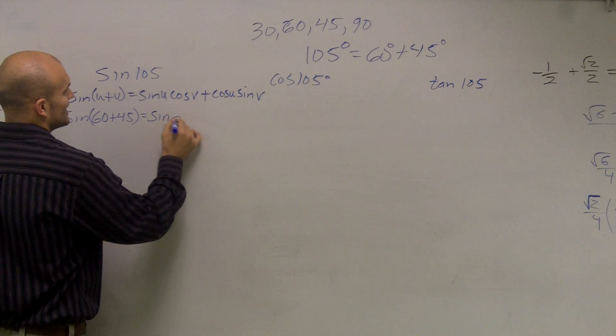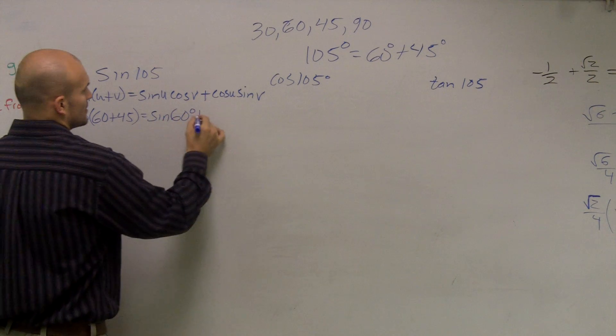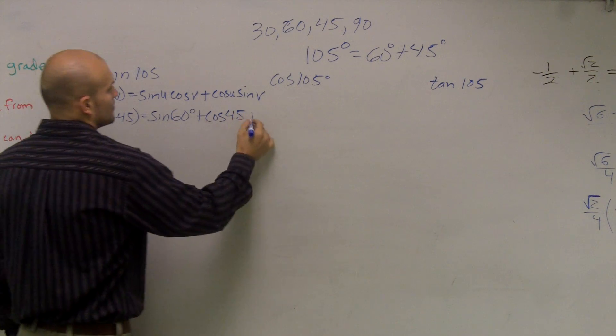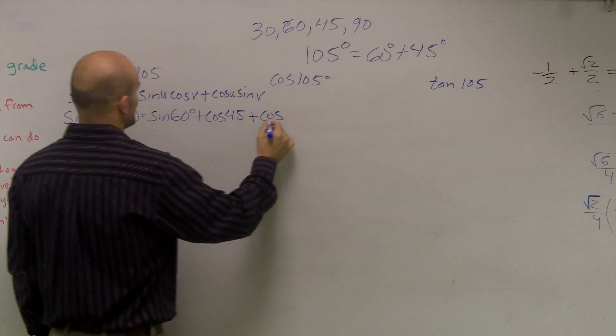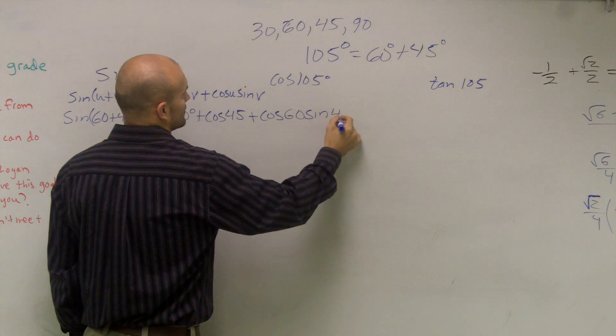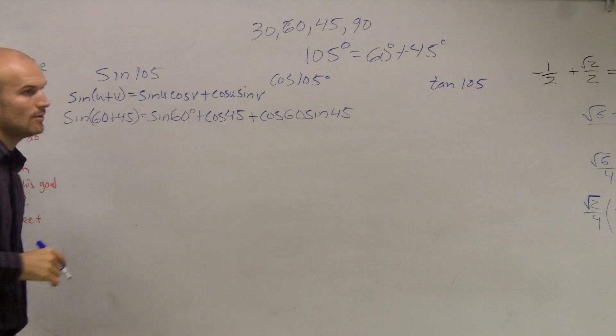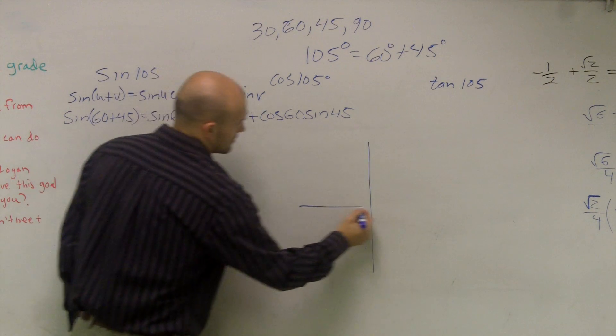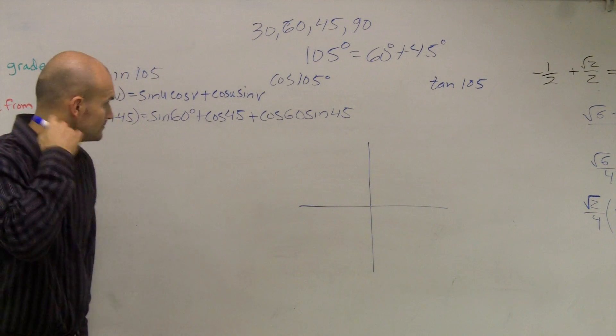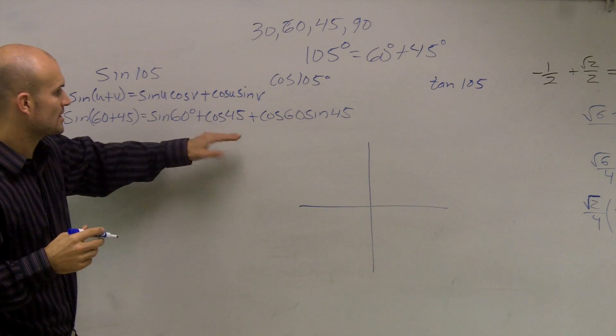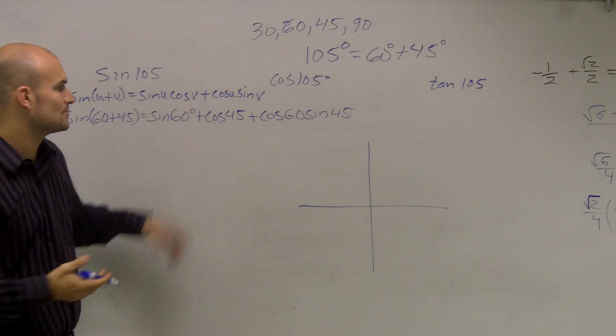So therefore, that's going to equal sine of 60 degrees times cosine of 45 degrees plus cosine of 60 degrees times the sine of 45 degrees. Now, what we simply need to do is use our unit circle to determine the values of each one of these angles.